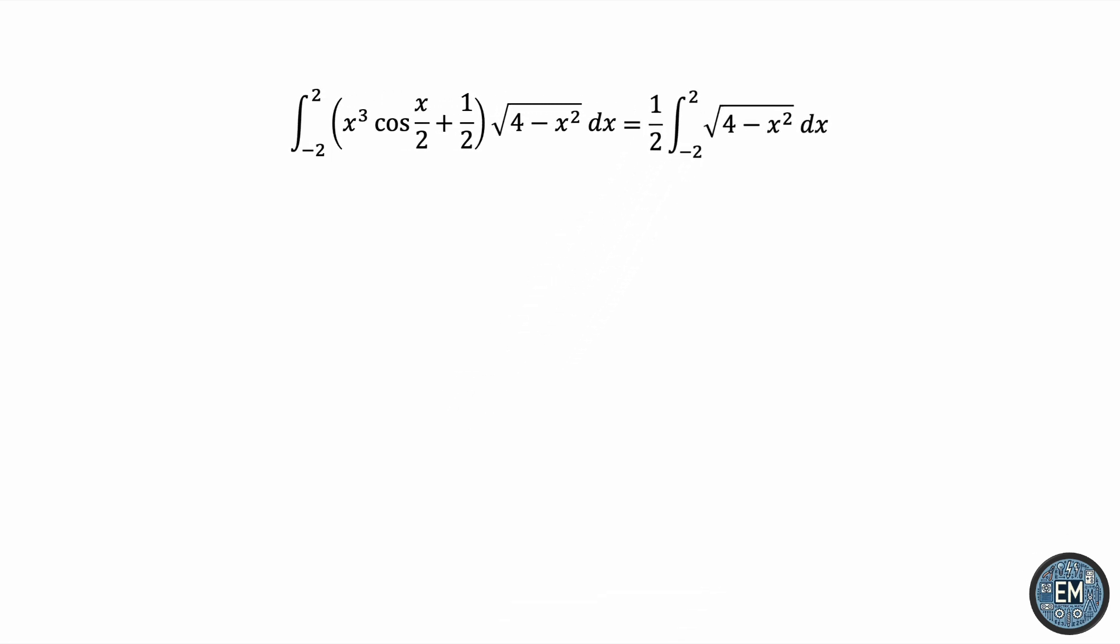This integral is much easier, and finding an antiderivative is not challenging. We can use trigonometric substitution, a method I've demonstrated multiple times already. However, we actually don't need to find the antiderivative here as well. Why? Because the integrand is actually the equation of the upper half of a circle whose radius is 2. So, this definite integral from negative 2 to 2 is just the area of this semicircle, which we can find using basic geometry.